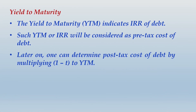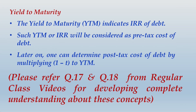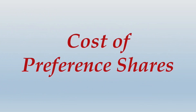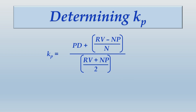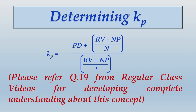Please refer to questions 17 and 18 from the regular class videos for developing complete understanding about cost of debt concepts. Moving ahead to the next component: cost of preference shares. Cost of preference share is computed just like cost of debt using either the approximation approach or the YTM approach. However, the (1 − tax rate) adjustment is not required, because the component of cost is preference dividend, which arises after tax in the income statement — making the entire calculation already a post-tax calculation.